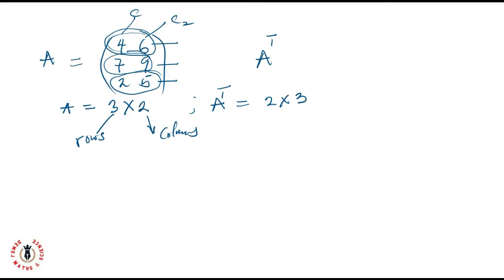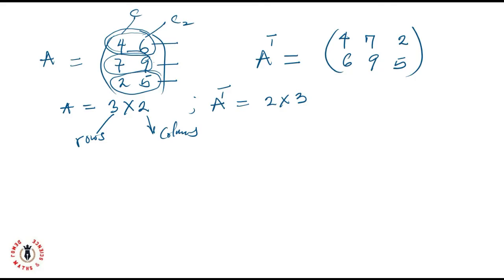Let's transpose A. A transpose becomes: my first row will be my first column — that will be 4 and 6. My second row will become my second column — that will be 7 and 9. And my third row will be my third column — that will be 2 and 5. The transpose of matrix A now leads to a 2 by 3 matrix.